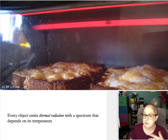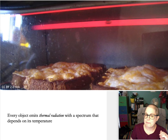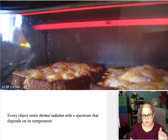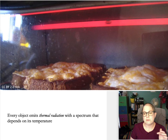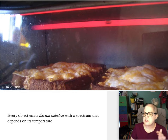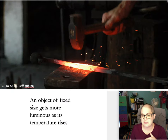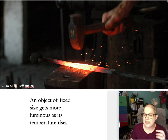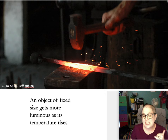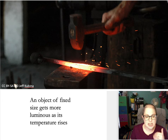A more realistic example is a toaster oven — every object emits something called thermal radiation, giving off light based on its temperature. A certain amount of light is emitted at different wavelengths based on that temperature. As the toaster coils warm up, they first don't give off any visible light, then glow dim red, then brighter red, then orange. If you go to something even hotter you get yellow and then white.